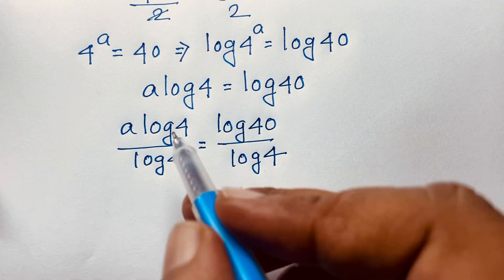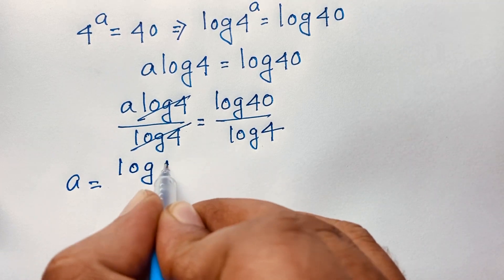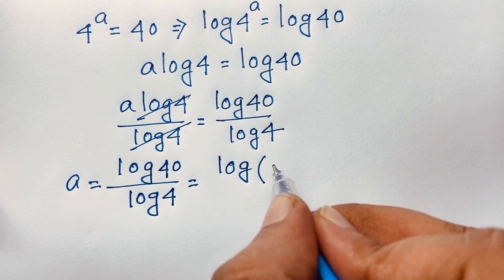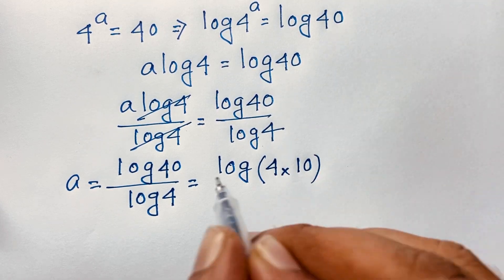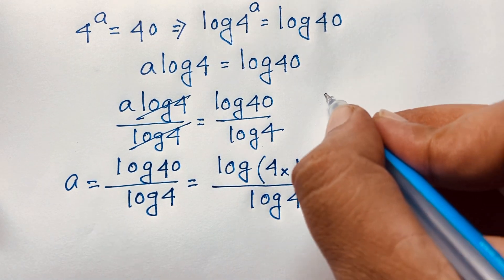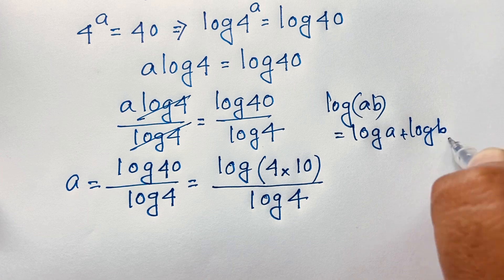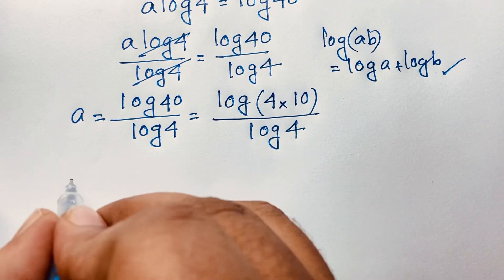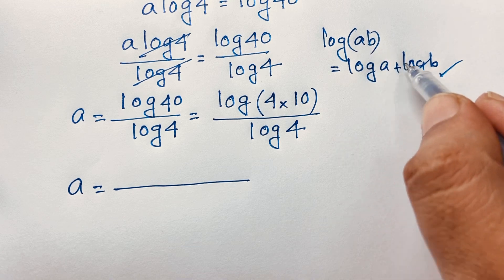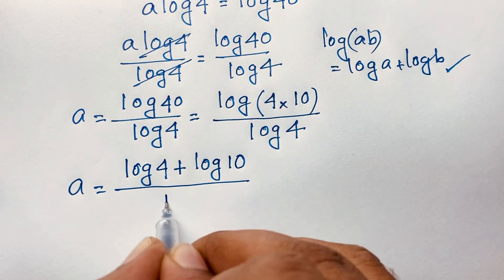Now, you can see easily this expression: log 40 equals log of 4 times 10, which is 40, over log 4. I evaluate this term using the rule log(A times B) equals log A plus log B. So applying this formula, A is equal to log 4 plus log 10 over log 4.